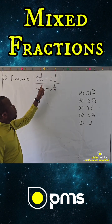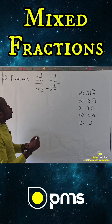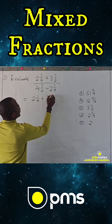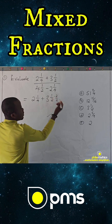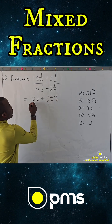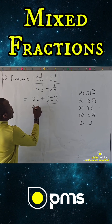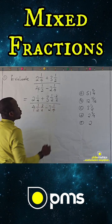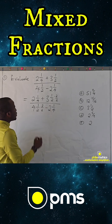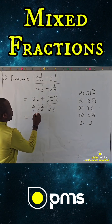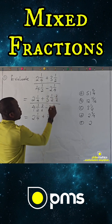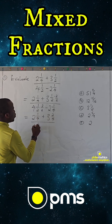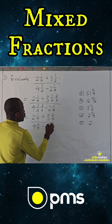The same thing here — I can multiply this by two over two. So this is equivalent to: two and one quarter, plus three and one half times two over two, over four and one half times two over two, minus two and one quarter. This gives us: two and one quarter, plus three and two over four, over four and two over four, minus two and one quarter.